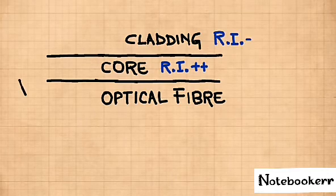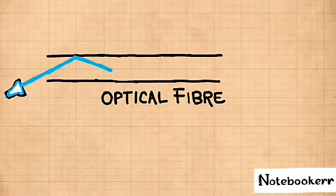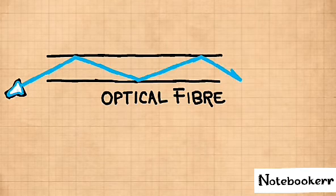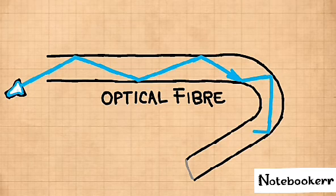Light when entering with an angle more than the critical angle bounces inside the fiber many times and reaches the other end with very little loss, even if the fiber is bent or of complex shape. A major advantage of the fiber is immunity to electromagnetic interference.